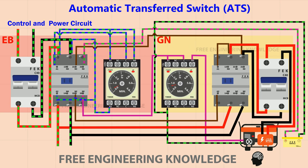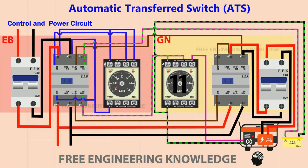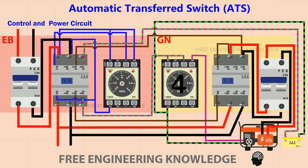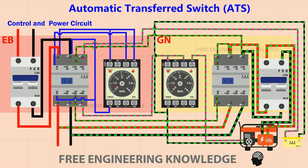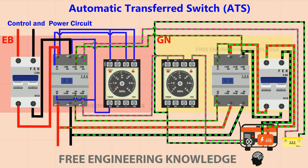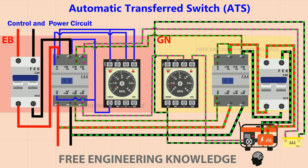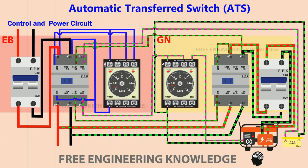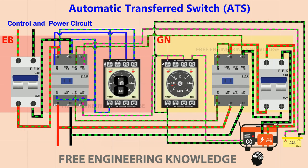Normally, EB side power is supplied to the distribution board. When there is a power cut on the EB side, it takes a few seconds for the generator to start up — we have already seen the reason for this. The generator switches on and power is supplied to the distribution board through it. After EB side power is restored, the generator is switched off and power is transferred back to the EB side within a few seconds.